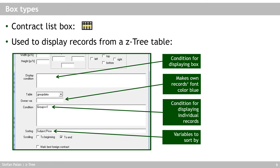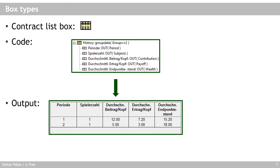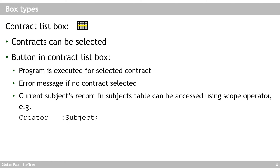Here is an example: a contract list box called 'history' takes values from the group data table for entries belonging to the first group. There are several output items — in German — including the period, subject number, total number of subjects, contributions, payoffs, and wealth. The result is a table with item labels as column headings and values in the rows, with formatting options such as the number of decimal places.